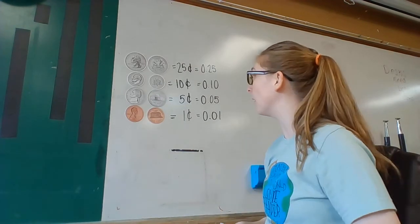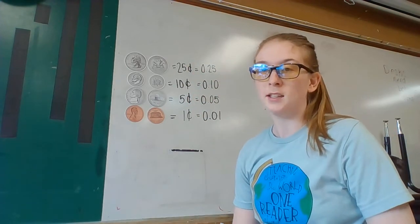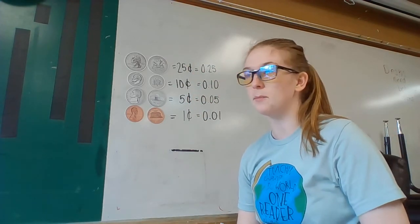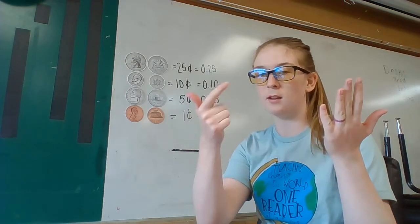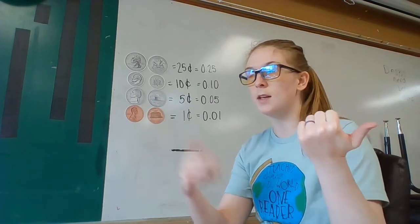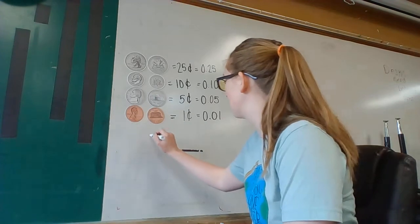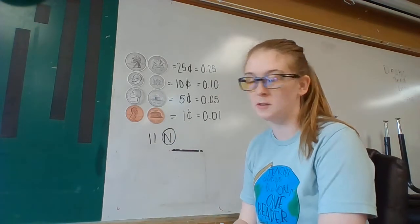All right, 55. Now if I counted by fives, could I get to 55? Let's see: 5, 10, 15, 20, 25, 30, 35, 40, 45, 50, 55. So I did 11 nickels. That got me to 55.